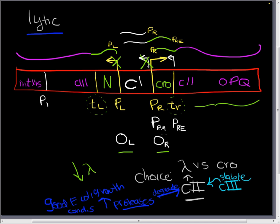This is going to be regulated both by the operator region as well as by this anti-crow that's being made over here off of PRE. So under these conditions, we have our high C2. We repress crow with lambda as well as with anti-crow. And this all makes sense.